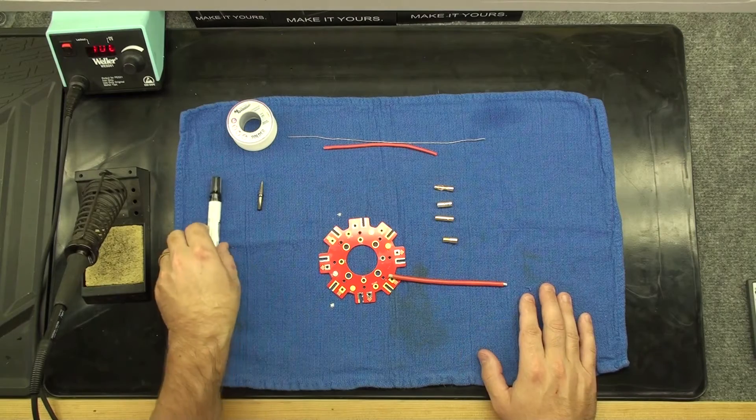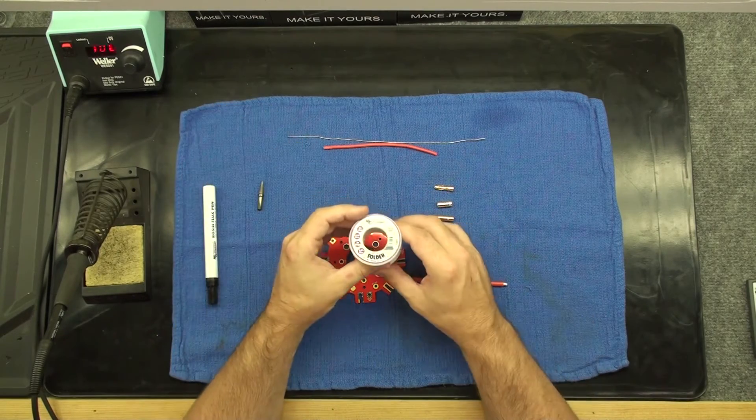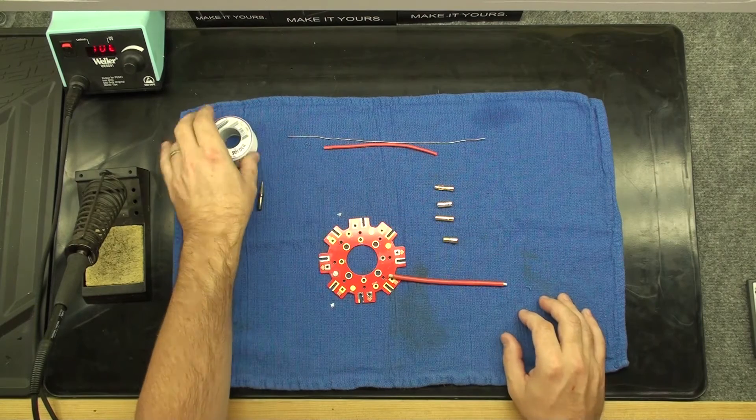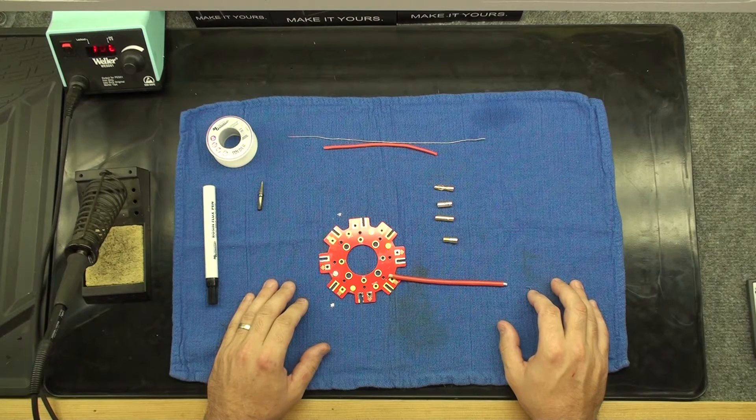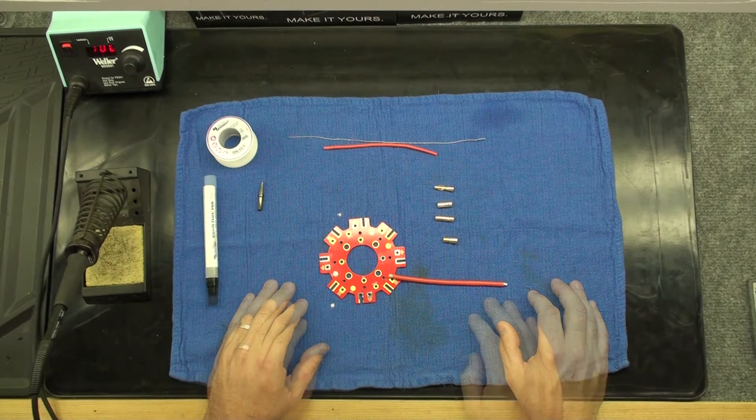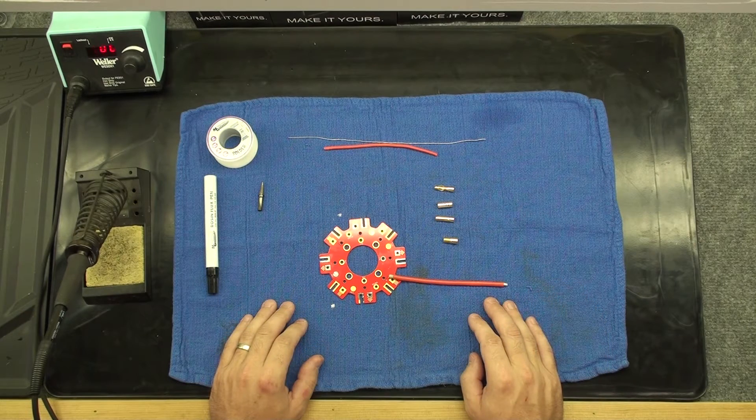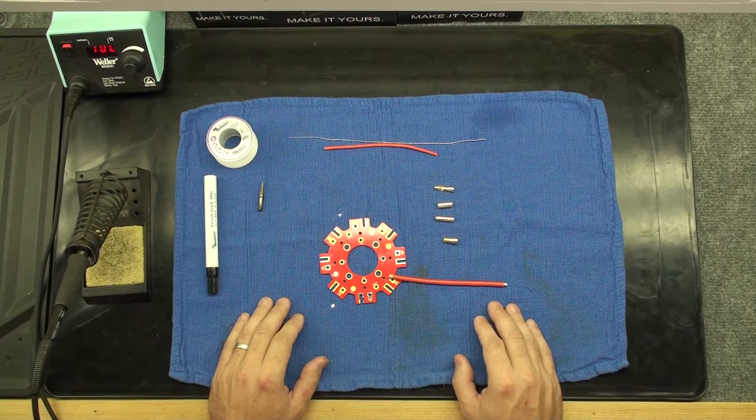We have a rosin flux pen and lead solder with 2.2 percent flux. The flux helps the solder flow and penetrate the wire properly. The lead base solder has a lower melting temperature and flows faster for soldering. If you do not have a rosin flux pen, you can also use flux paste. This will work exactly the same.